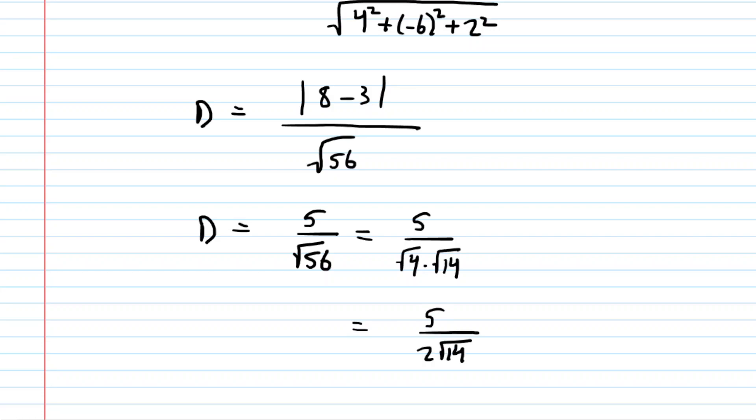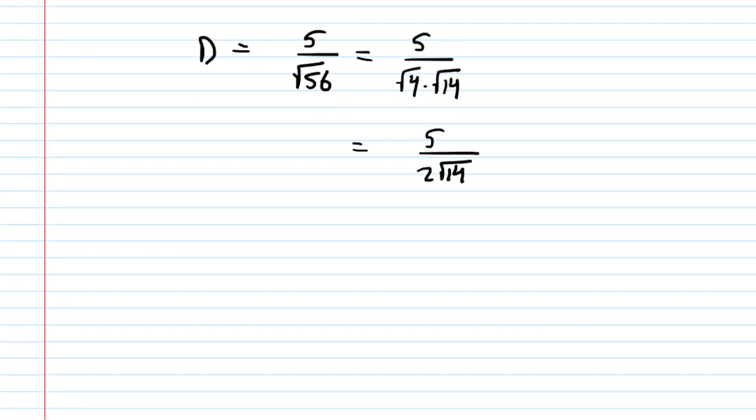We still have a radical in the denominator, so we'll finally rationalize by multiplying the bottom and the top by root 14. We get 5 times the square root of 14 over 2 times 14, but, of course, that's just 28. So, this would be the final answer for the distance between those parallel planes.